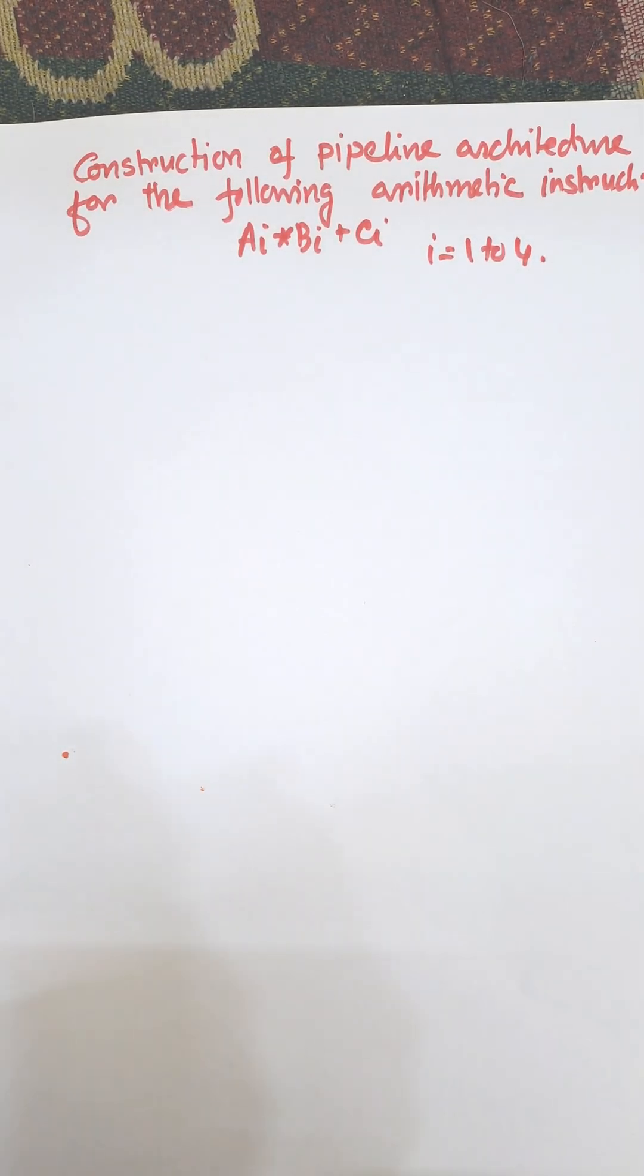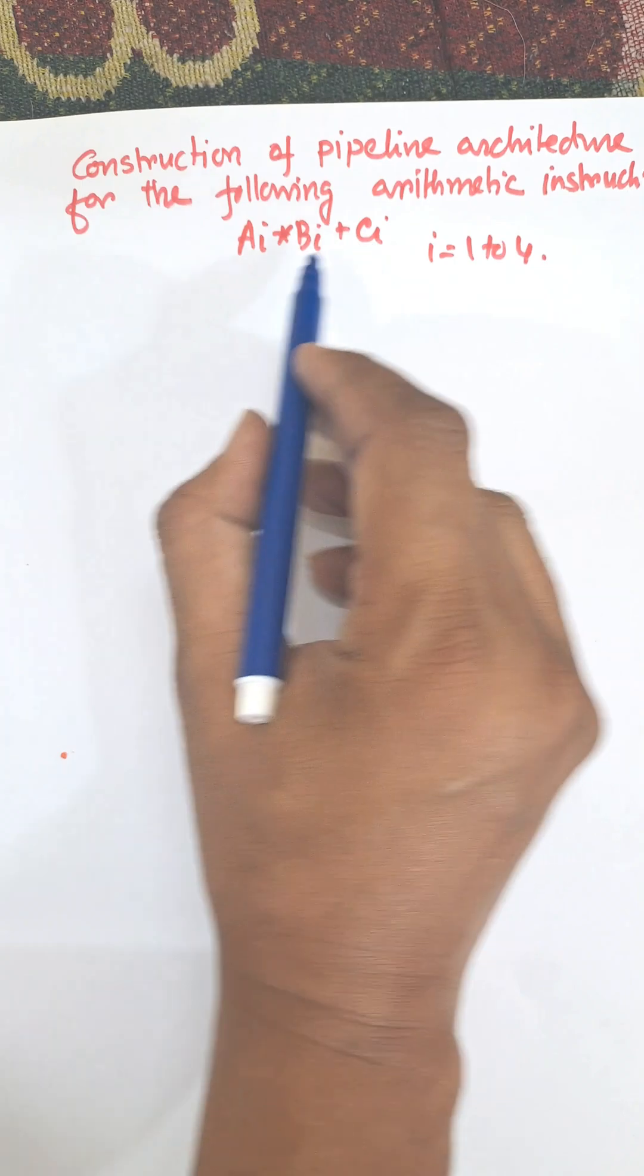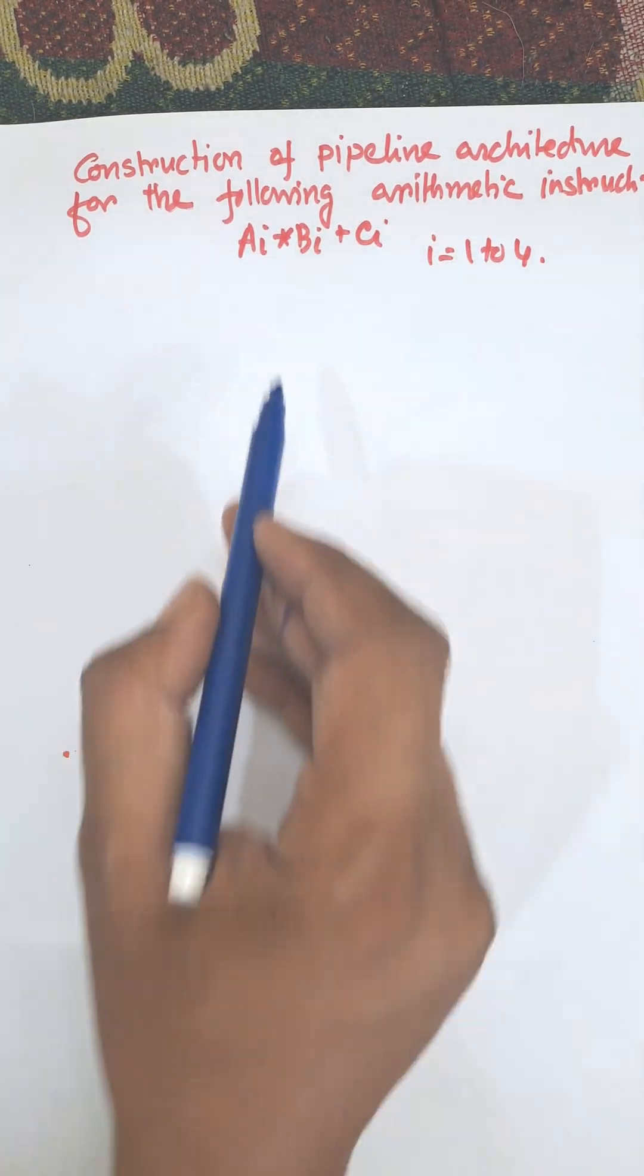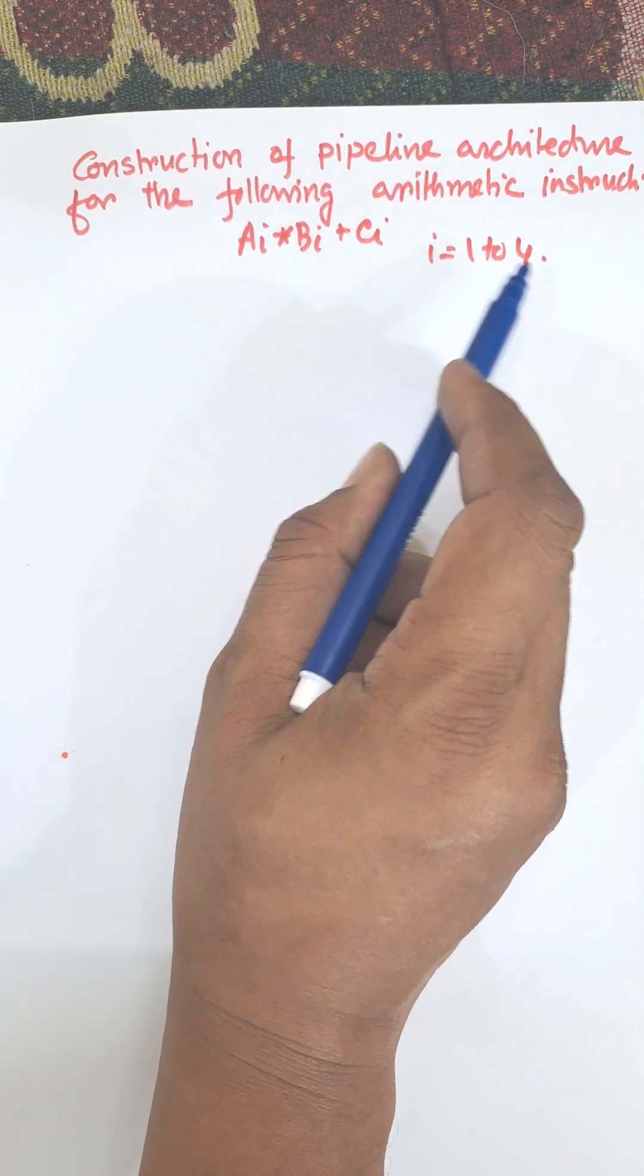Hi everybody, in this video I am going to construct a pipeline architecture for the following arithmetic instruction: ai into bi plus ci, where i equals 1 to 4.